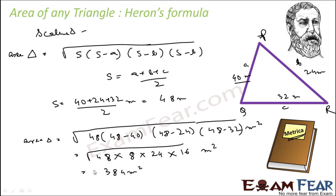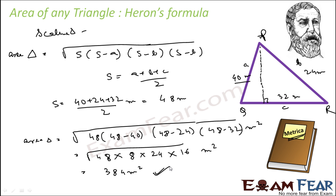You find the area of this triangle by any method and you will get this answer. Even if you draw a perpendicular line and find the height and then find the area, you will get the same answer. That is the power of Heron's formula — you can find the area of any triangle, any kind of triangle, as long as you know the measurement of all three sides.